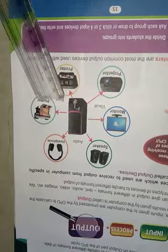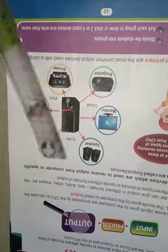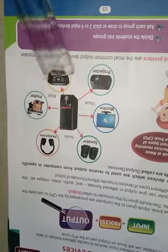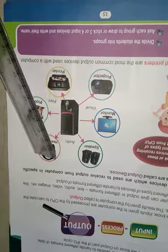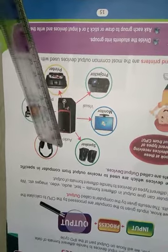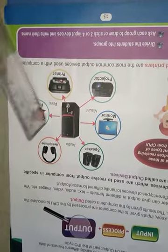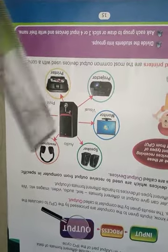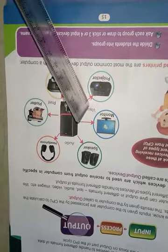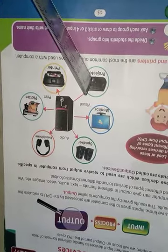The output devices include headphone, plotter, printer, projector, monitor, and speaker. For audio, speakers and headphones are used. For printing, plotters and printers are used. To see visually, projector and monitor are used.